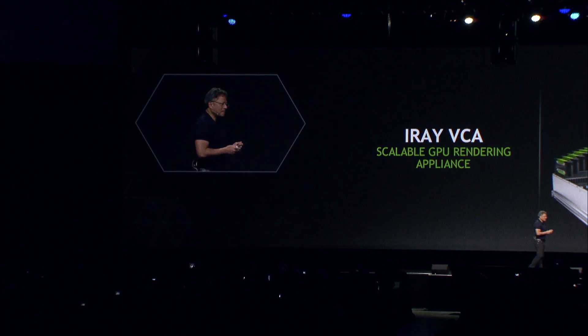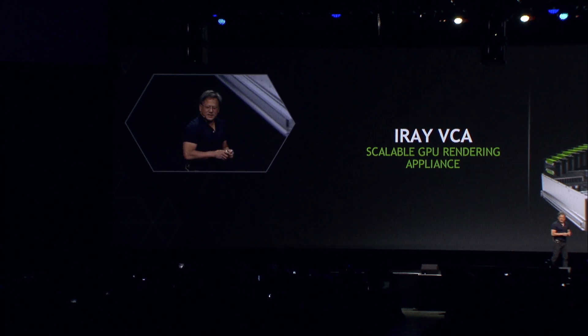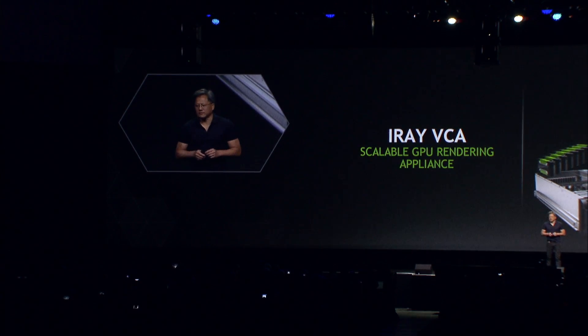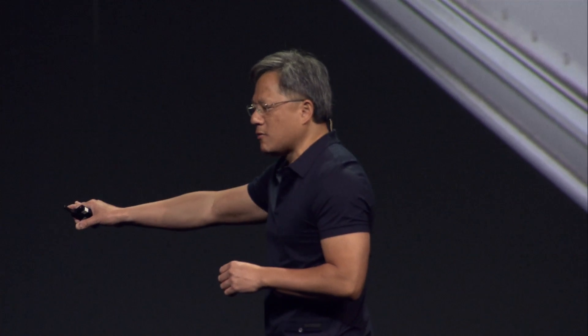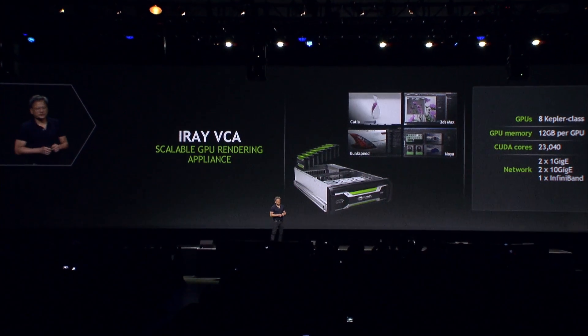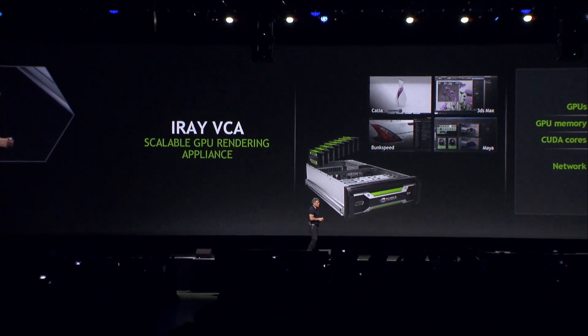However, it is just way too slow. So today, we are introducing a brand new type of system. We call it the iRay VCA — the world's first scalable rendering appliance. Each iRay VCA has eight GPUs, each with 12 gigabytes, totaling 23,000 cores. The networking capability is packed with 2 gigabit, 200 gigabit, and of course InfiniBand.